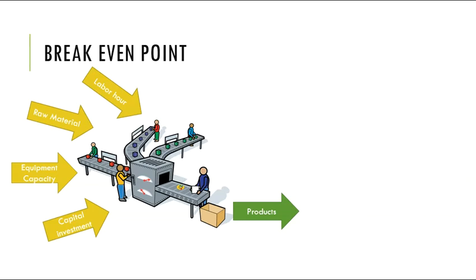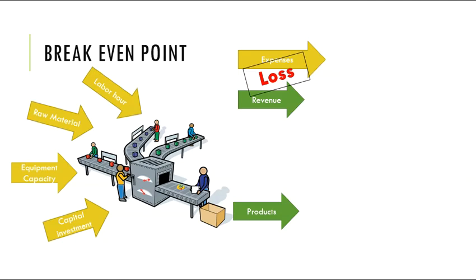When any factory is working, there might be three possible situations. If we translate all of our resources into monetary terms we would call them expenses. So if our expenses are more than what we are earning from the business, we will be at a loss. If we are more lucky, we might be in the situation that our revenue — the amount that we were able to sell — is more than our expenses.